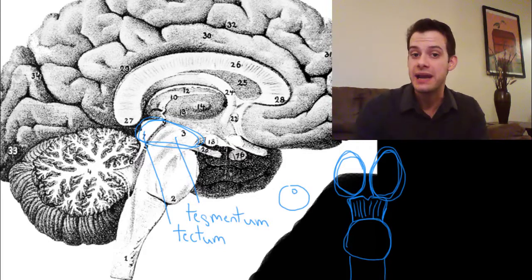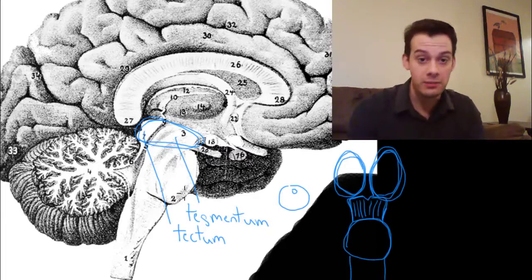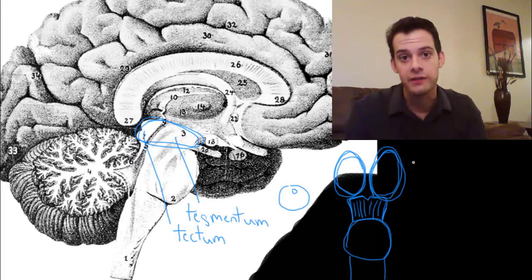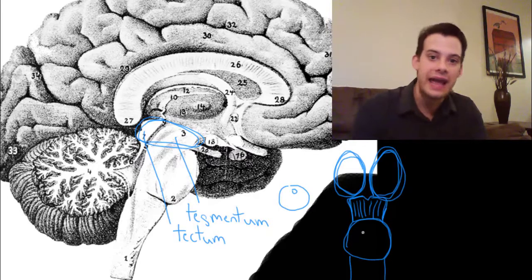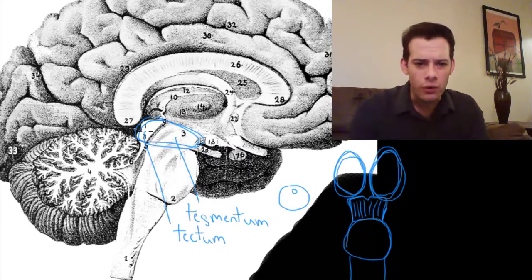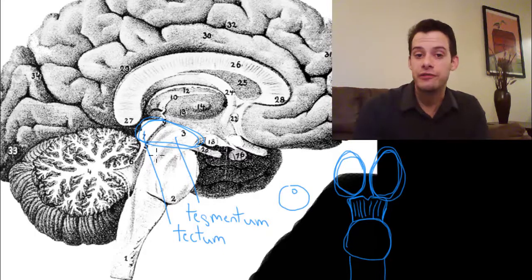And it's easy to forget that when you look at these side views. It's easy to forget that there's two of many of the structures that we're going to talk about. When I talk about the thalamus in the next video there's two of them and there's two of the hippocampus and there's two of the amygdala. And when you only look at the brain from this angle it's easy to forget that.